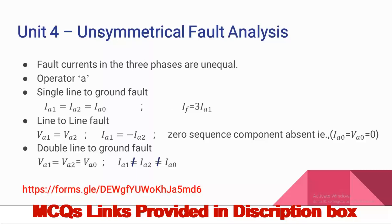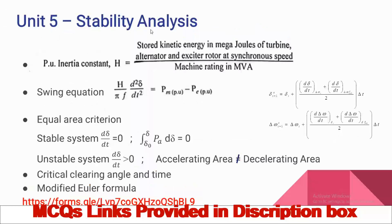The Unit Four link is provided in the description box. Practice the multiple choice questions. Unit Five: Stability analysis. Stability means the ability of the power system to remain in synchronism after being subjected to a disturbance. Small disturbance corresponds to steady-state stability; sudden disturbance corresponds to transient stability. After the disturbance, the power system is stable when voltage and frequency are coincident with the tie line, and maximum power is flowing without variation.